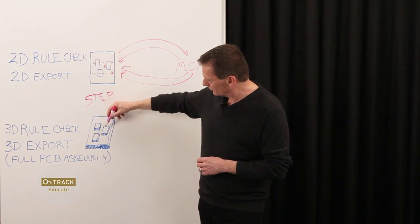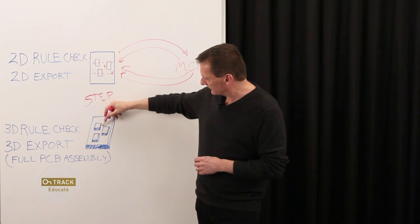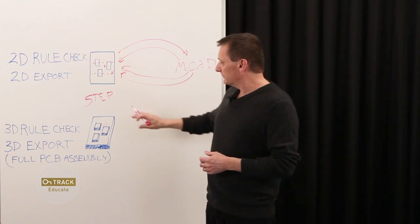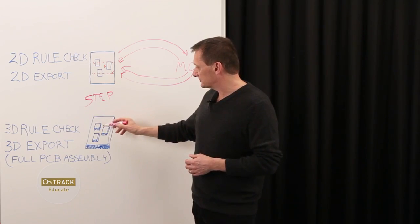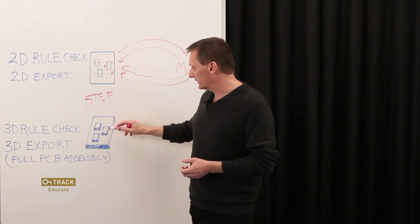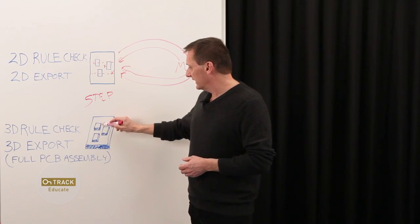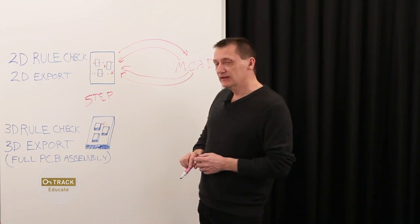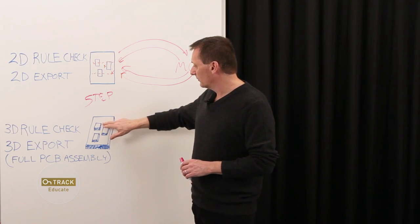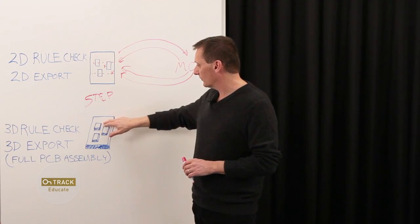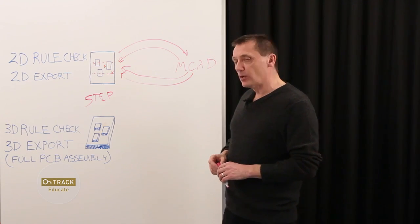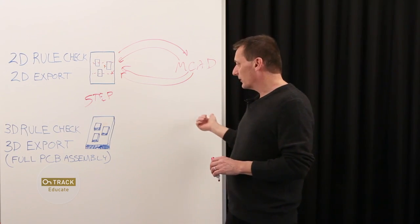Now a true component-to-component clearance can be checked. And not only that, the true shape of the enclosure can be checked relative to the true shape of any component on the board. So, now any problems that are found can be identified by the PCB designer. With a simple adjustment of a component or maybe even choosing a different component type, the problem can be resolved before going to mechanical.